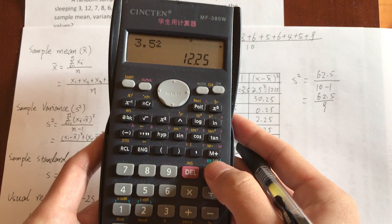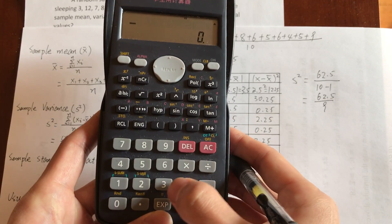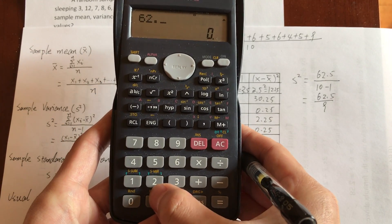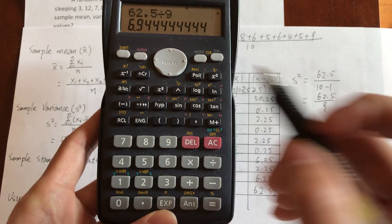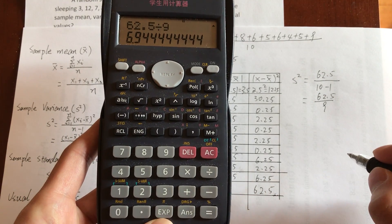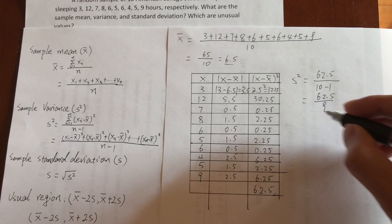I will compute this: 62.5 divided by 9, so it's approximately 6.94.